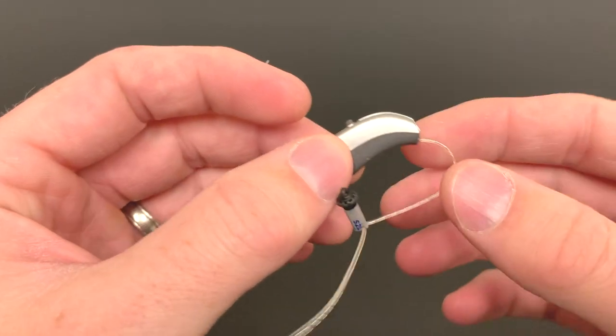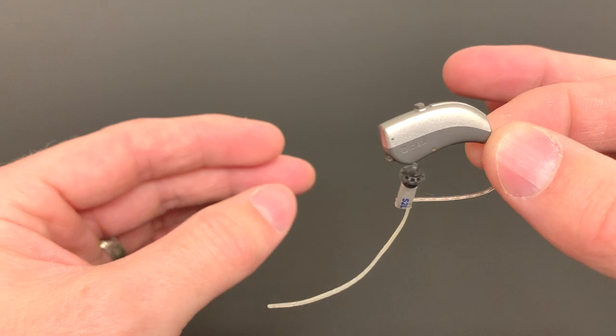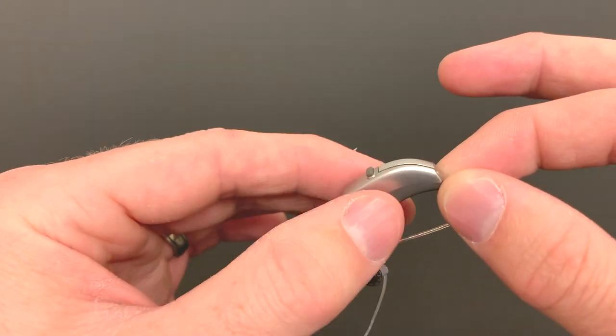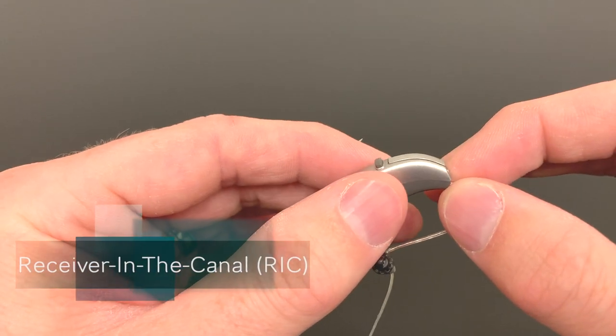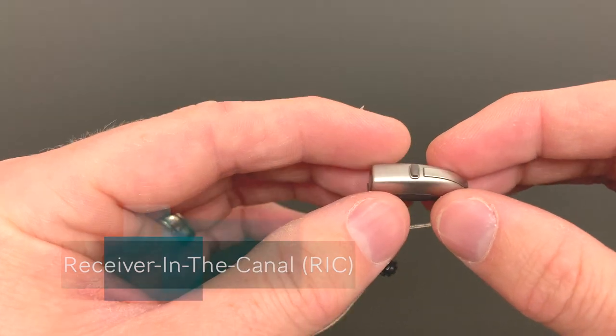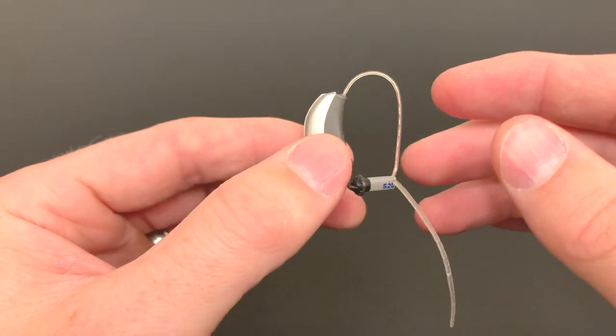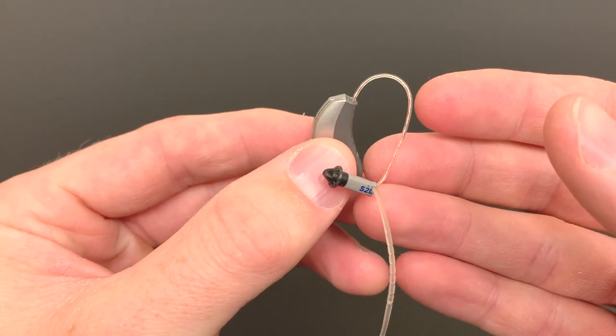So the first style of hearing aid I'd like to talk with you about is a receiver in the ear or receiver in the canal, or you might hear it referred to as a RIC or a RITE. This is a pretty common style of hearing aid that you see on the market.